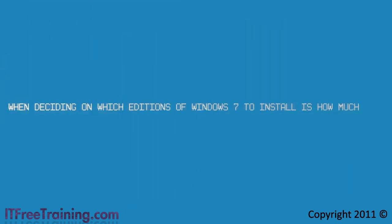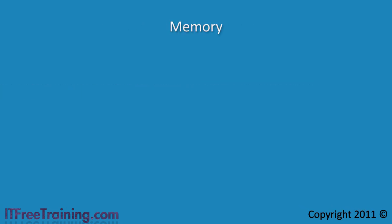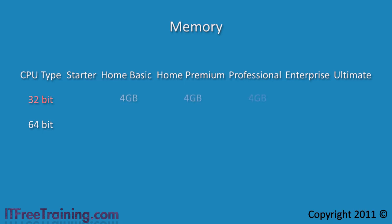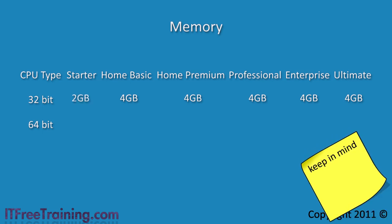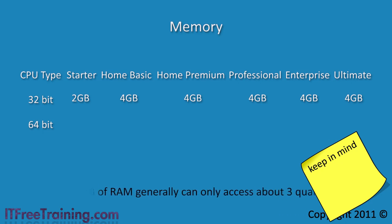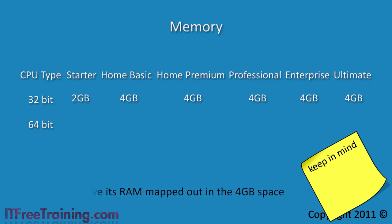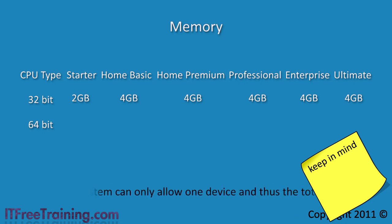The last thing to consider when deciding which edition to install is how much memory you want to use. On a 32 bit system, the most RAM you can use is 4 gigabytes, though the Starter edition is limited to 2 gigabytes while all other 32 bit editions are limited to 4. Keep in mind that a 32 bit system with 4 gigabytes of RAM generally can only access about three quarters of it, because hardware such as the video card must also have its RAM mapped within the 4 gigabyte address space, meaning the total accessible RAM is never really 4 gigabytes.